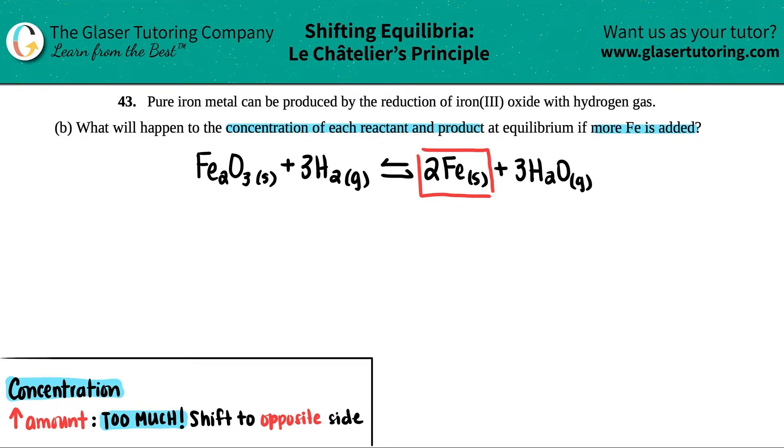But I notice that iron is a solid. Back to part A, remember when we did the K expression, we canceled this one out. Generally speaking, if you add more of something, you have way too much and you shift to the opposite side.